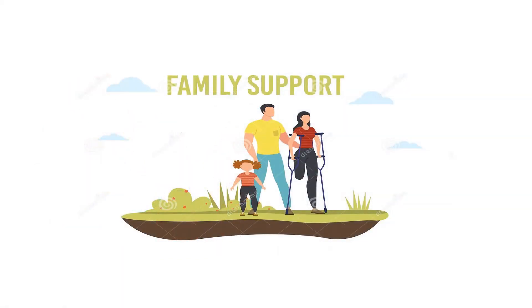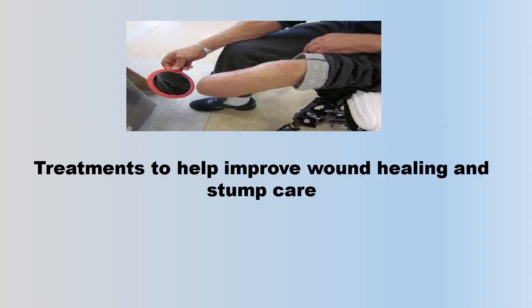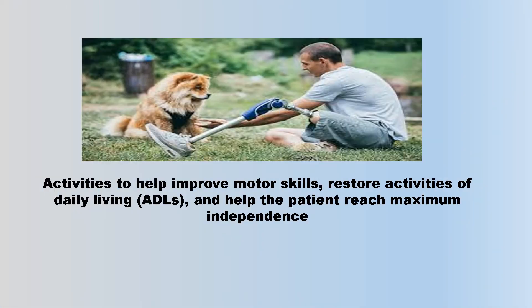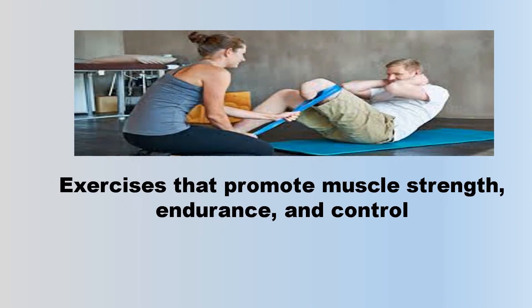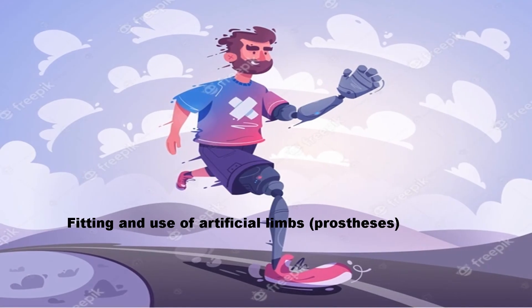Family support also plays a role. In order to help reach rehabilitation goals, an amputation rehabilitation program may include: treatments to help improve wound healing and stump care; activities to help improve motor skills, restore activities of daily living (ADLs), and help the patient reach maximum independence; exercises that promote muscle strength, endurance, and control; and fitting and use of artificial limbs, or prostheses.